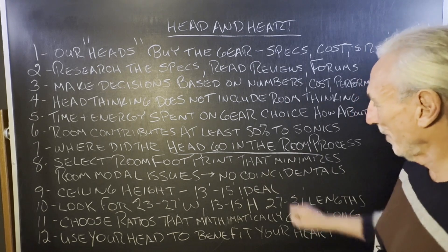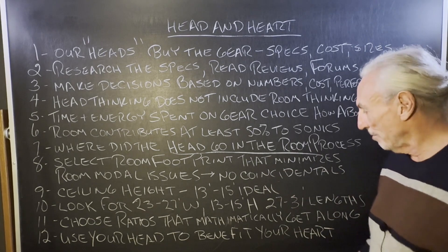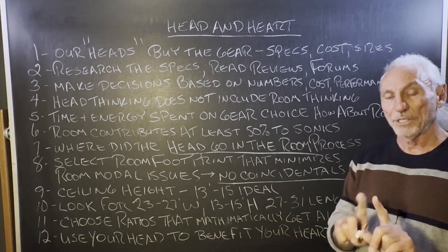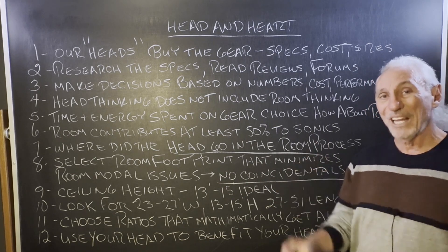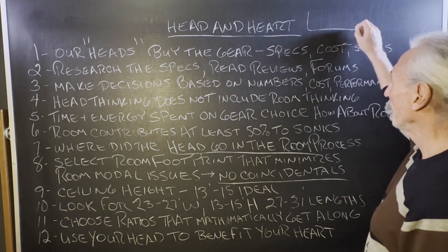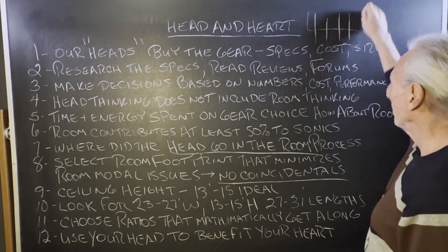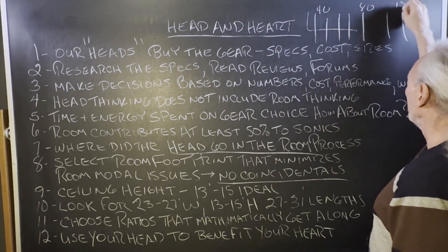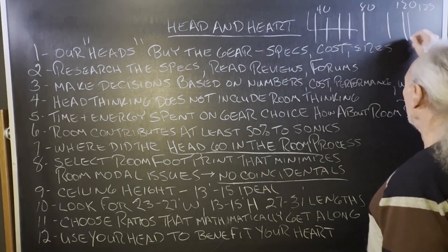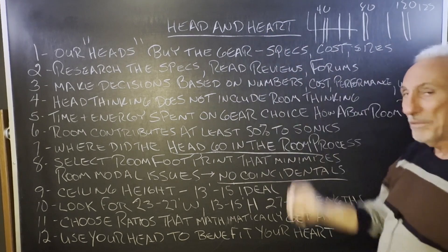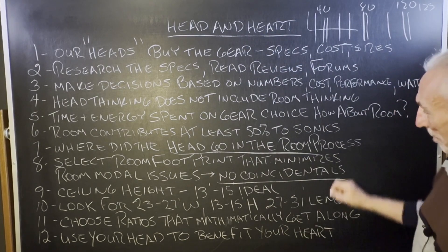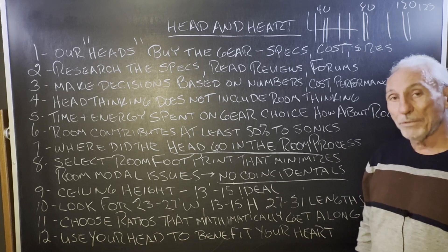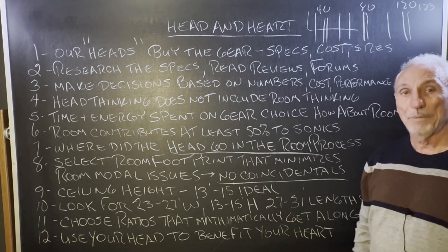Footprint is critical. We want to select a width, height, and length with no coincidentals. Coincidentals are modes that are really close to each other — less than five hertz apart. When that happens, they actually get louder than axial modes. So if you have coincidentals spread throughout the room, say one at 40, one at 80, another at 120 or 123 Hz, you get a double impact and they get really loud. The goal is to put less treatment in the room, not more.